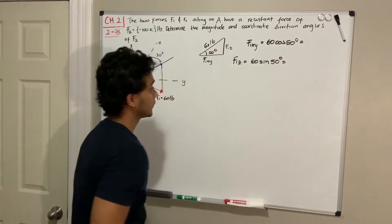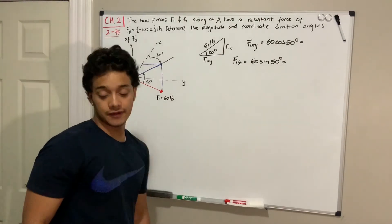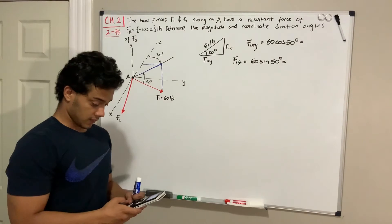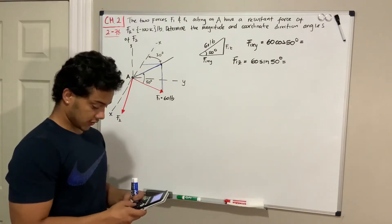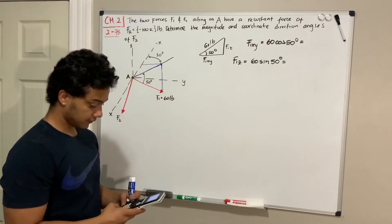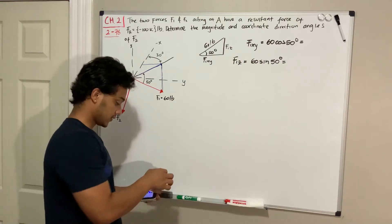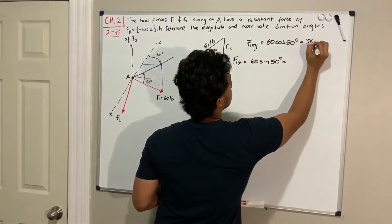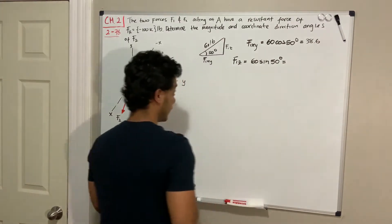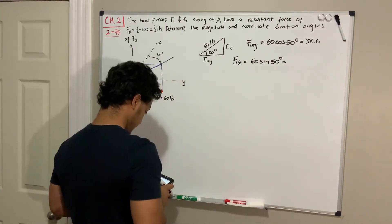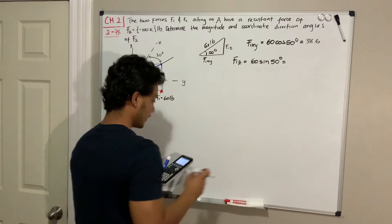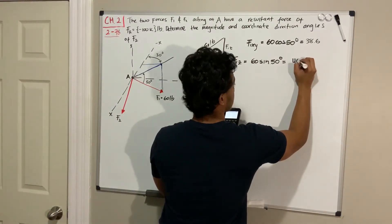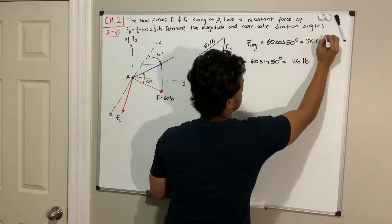Using the calculator: 60 times cosine of 50 equals 38.6 pounds for F1 in the xy plane, and 60 times sine of 50 equals 46 pounds for F1 in the z direction.